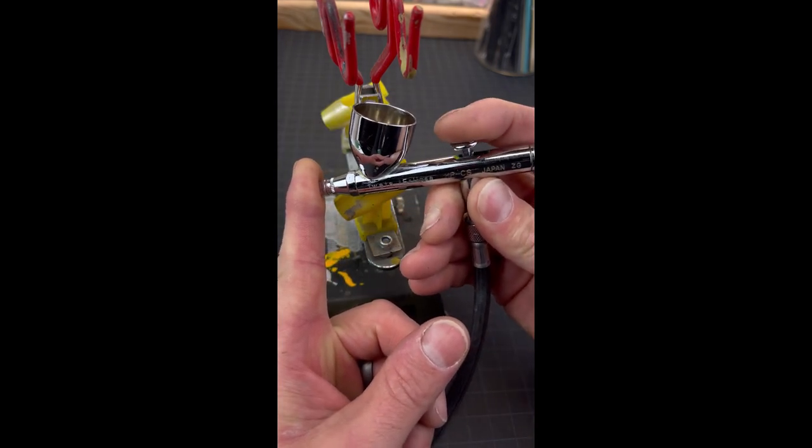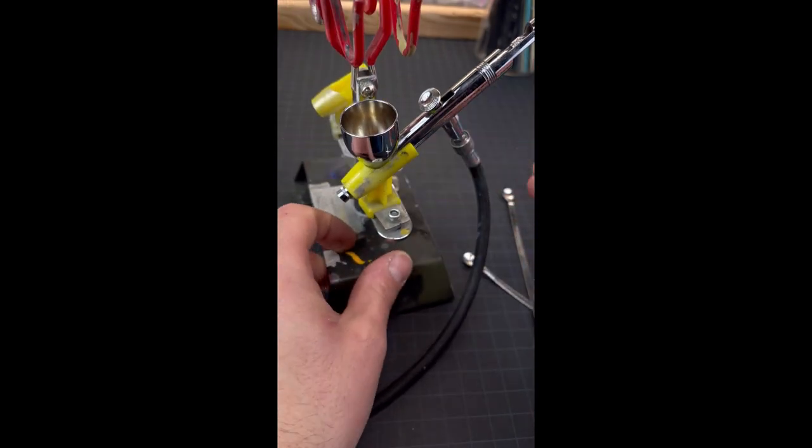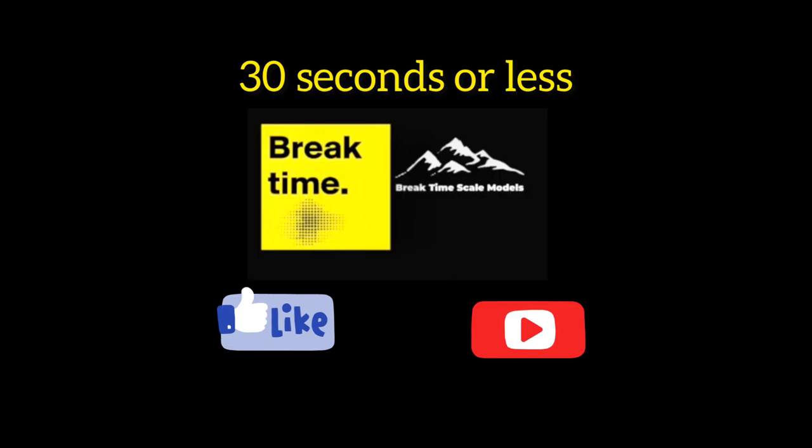When you're done, you can put your finger over the top, pull back on the trigger slightly, and get some mixing going on inside that bowl by the use of the air. This has been 30 seconds or less.